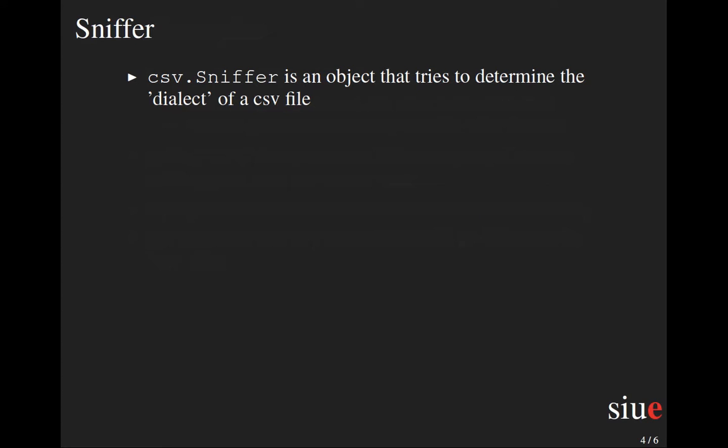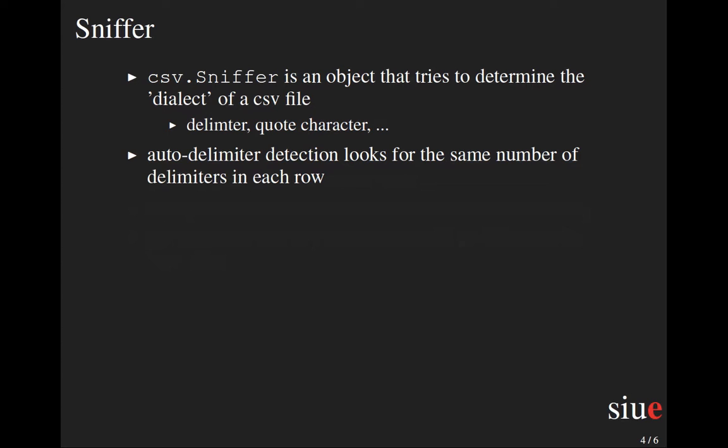The CSV module has a class called Sniffer with a capital S. Its job is to automatically determine the dialect of a CSV file — figuring out the delimiter, whether there's a quote character, and about five to ten total options. I was surprised the sniffer was failing on one of my CSV example files. Looking into the code, I realized it expects the same number of columns throughout the entire file, looking for a delimiter that occurs a consistent number of times per row. The problem was also probably the random extra spaces at the ends of some strings.